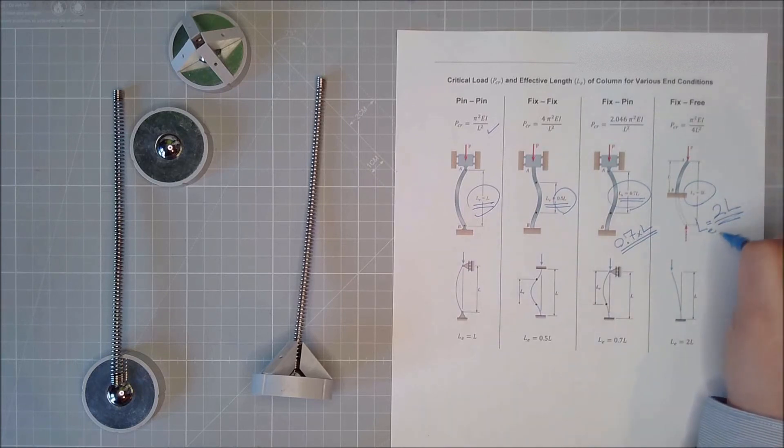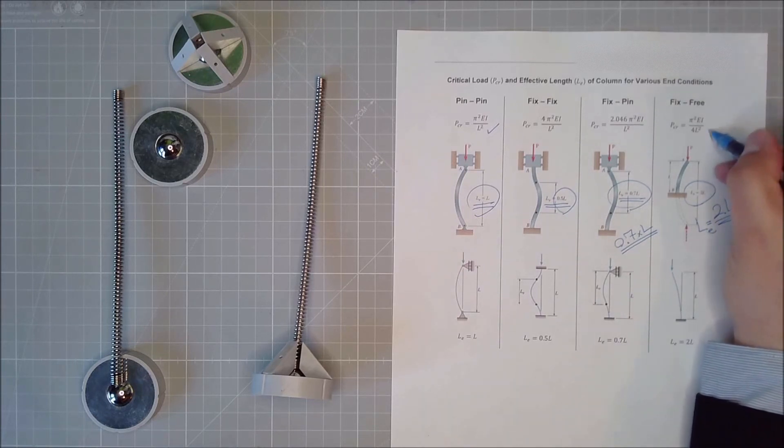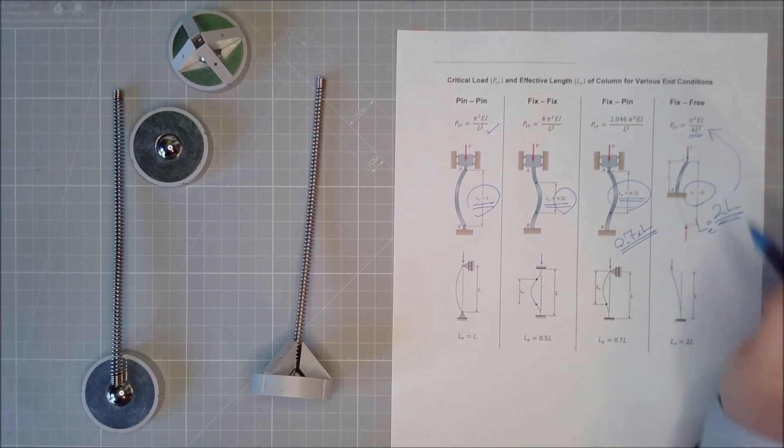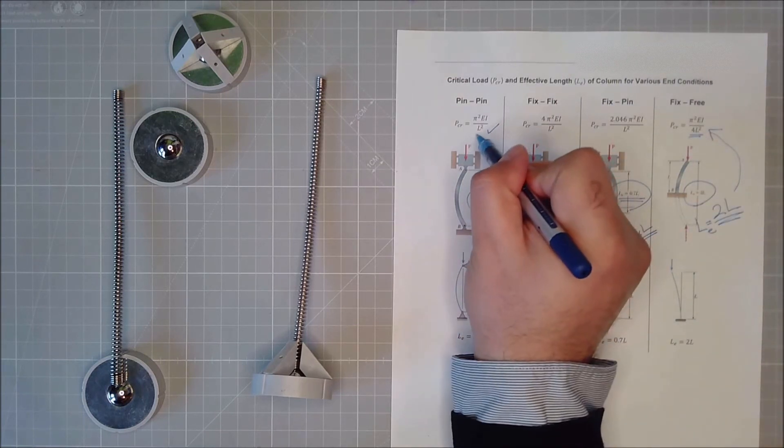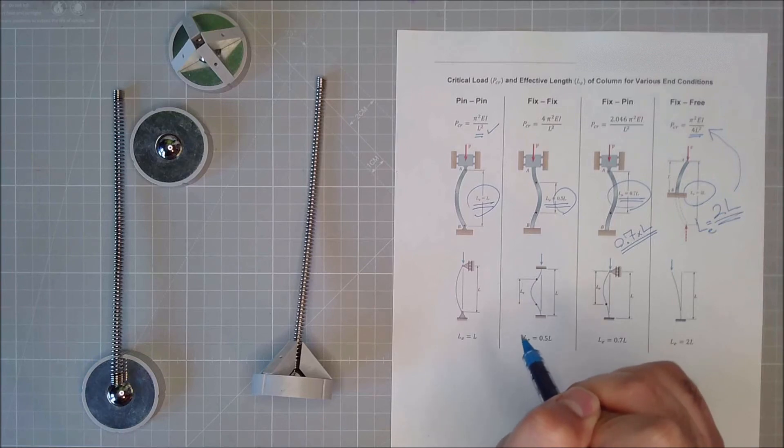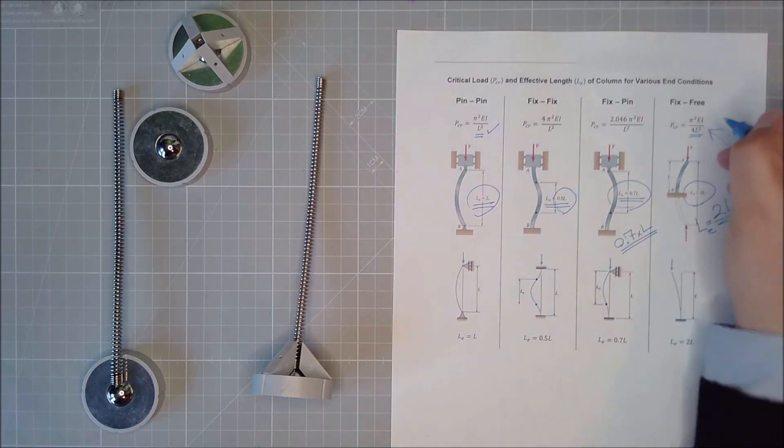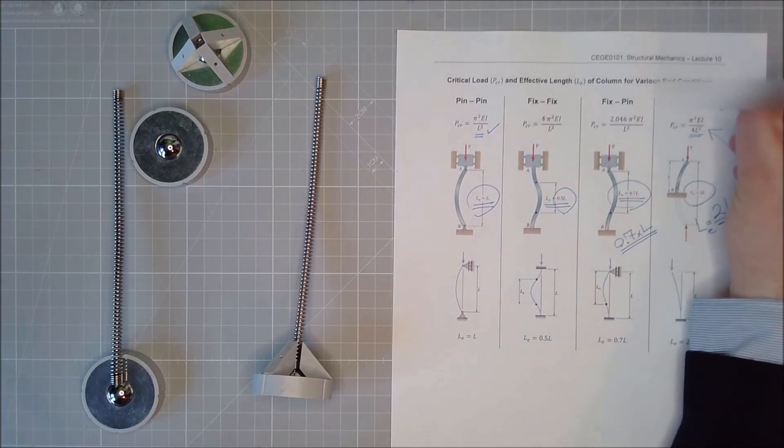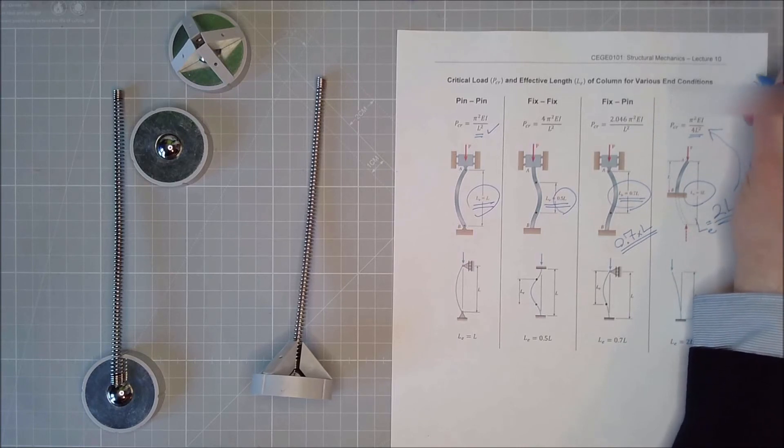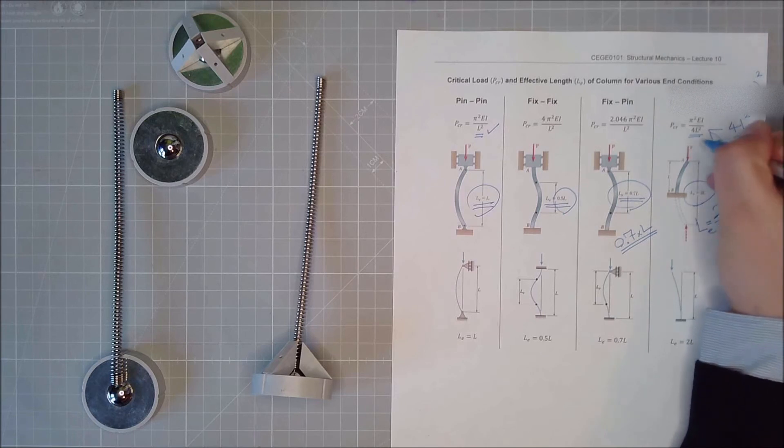And because the length is twice, then you see in the formula, I have 4 times L to the power of 2, rather than L to the power of 2. What has happened here, I just put L to the power of 2, I put 2L to the power of 2, and then I get 4L to the power of 2, and I put it here.